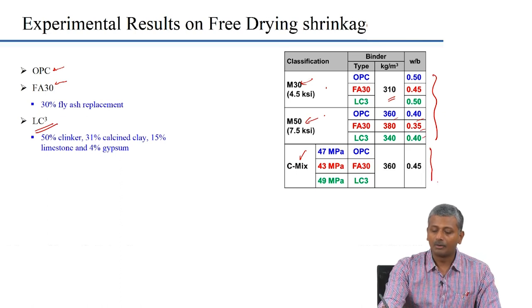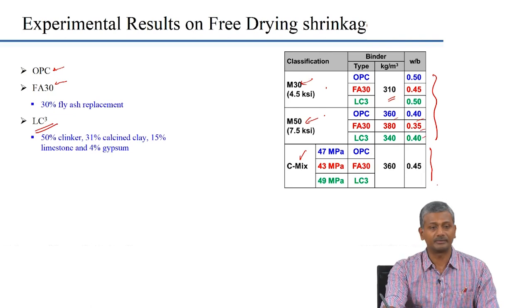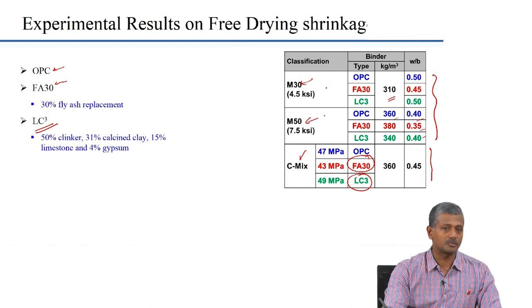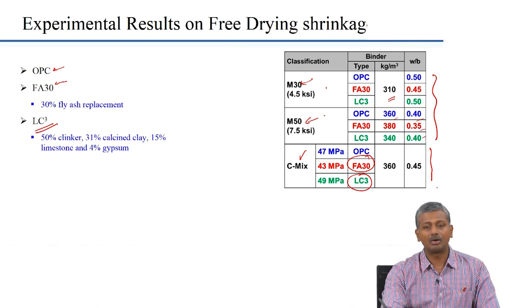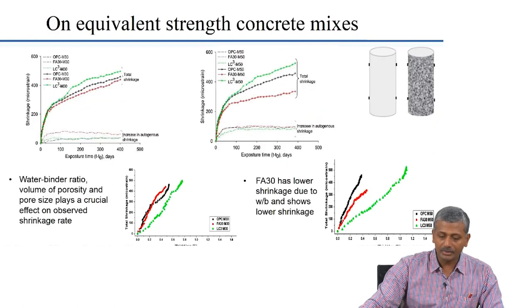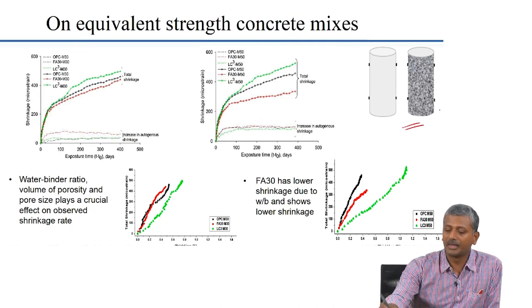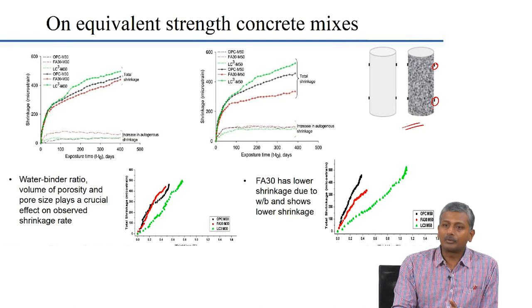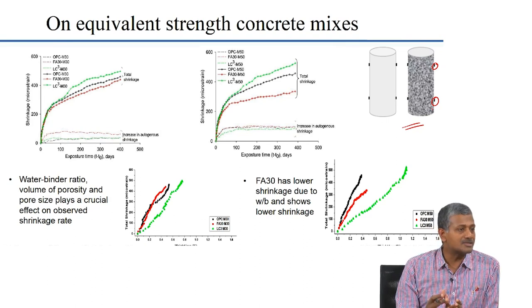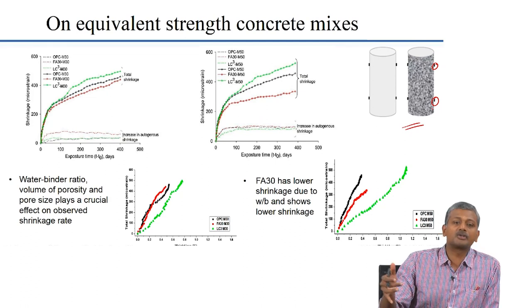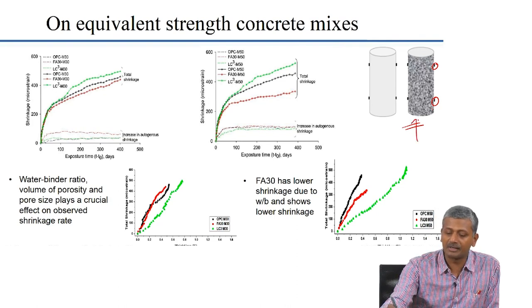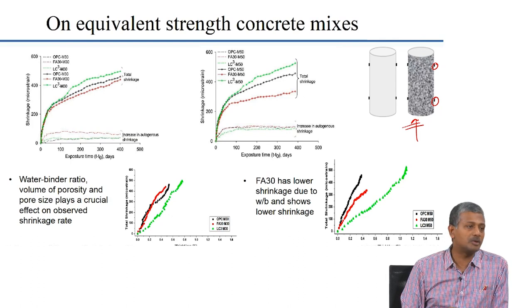The paste content in these mixes can be different because of differences in binder content and water-binder ratio. In the common mix, all pastes will be of the same mass — not the same volume — because concretes with LC3 or FA30 binders will have slightly higher paste volume compared to OPC, due to the lower density of fly ash and LC3 components. Here, shrinkage is measured on cylindrical specimens by pasting pellets on the surface and measuring deformation between pellets using a Dembeck gauge, just as was done for the creep experiment previously.